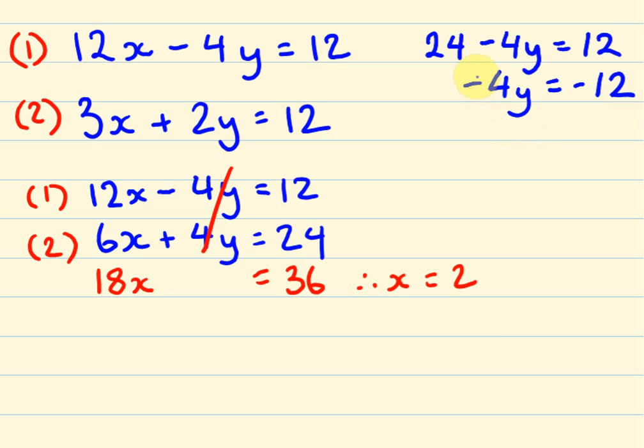Because these are both minuses, they can cancel each other out, so +4y = +12, and y is going to be equal to 3.